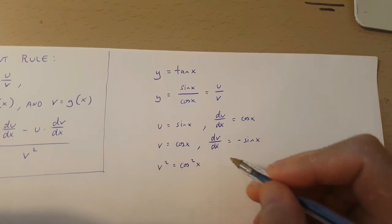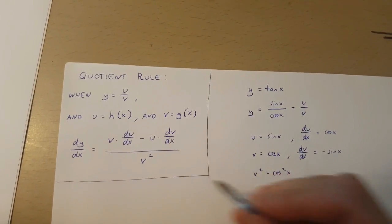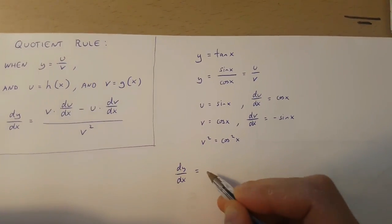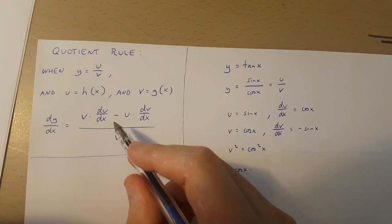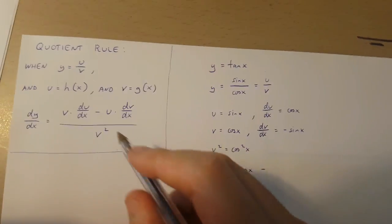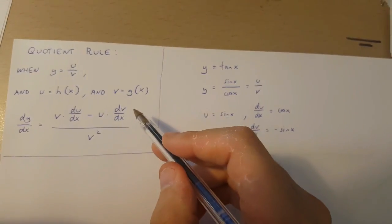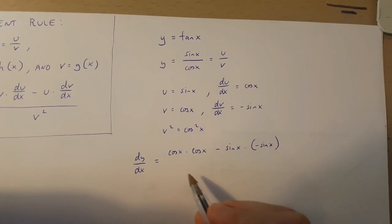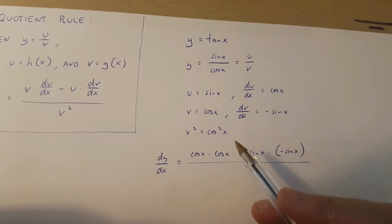With all this information, I can now figure out what dy over dx is using the quotient rule. So dy over dx is equal to v, which is cos x, times du over dx, which is cos x, minus u, which is sin x, times dv over dx, which is minus sin x. And this is all over v squared, which is cos x squared.